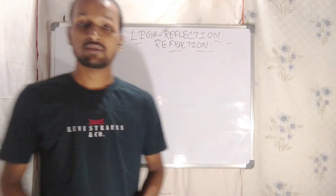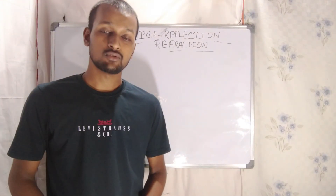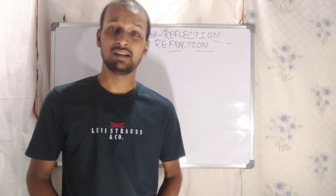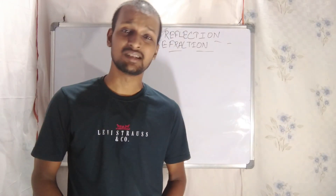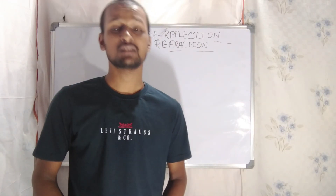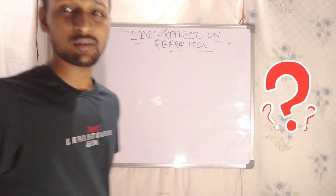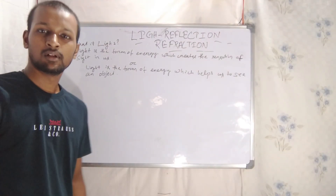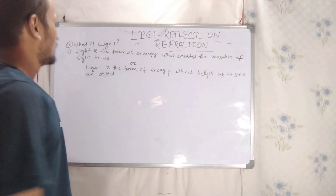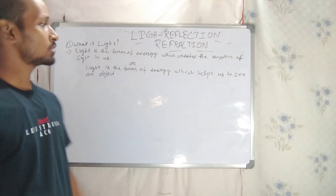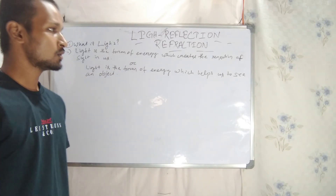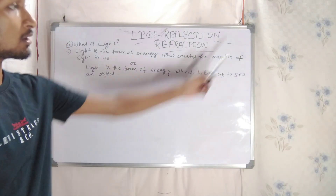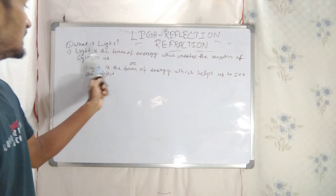When we start this chapter, the first thing is light. What is light? Light is the form of energy which creates the sensation of sight in us.